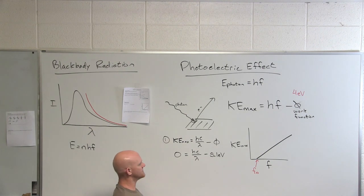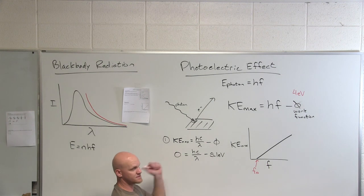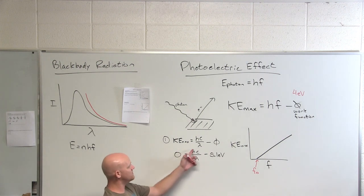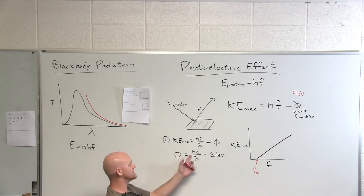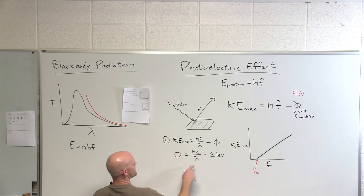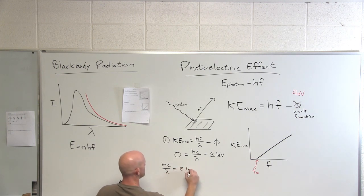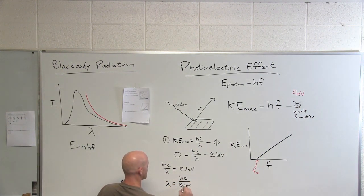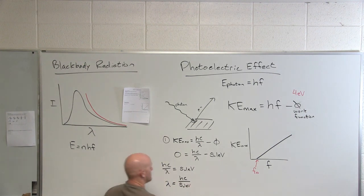In this case, we're told for gold it's 5.1 electron volts. What makes this a little more challenging? What are the units on h given to you? Joule seconds. It's not in electron volt seconds. So when you plug in all your numbers here, you're going to end up with an answer in an energy of the photon in joules. We're going to have to rearrange it and get it in electron volts. If we rearrange some terms, we'll have hc over lambda equals 5.1 electron volts. So if we solve for lambda, we'll have hc over 5.1 electron volts.